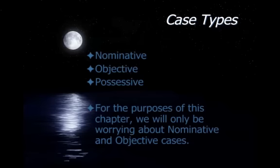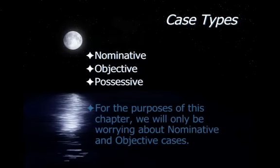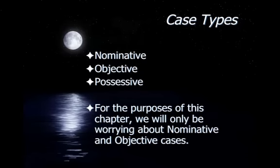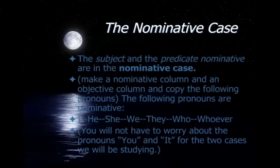We have three case types in English. Languages like Latin have six or seven — we only have three. The nominative, the objective, and the possessive. For the most part, we're going to be worrying about nominative and objective. We'll do a little bit with possessive, but really it's just one little rule. The predominance of our work is going to be nominative and objective.